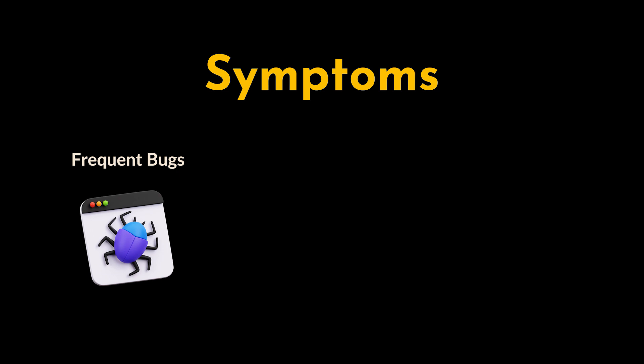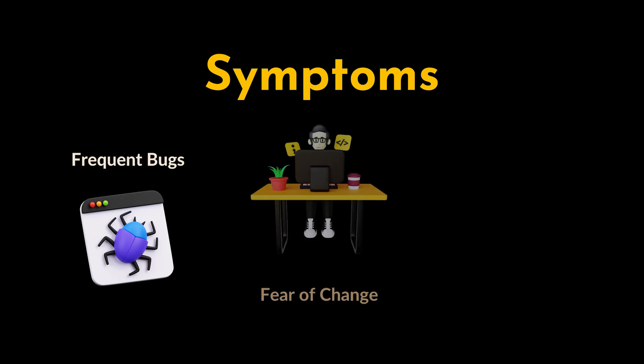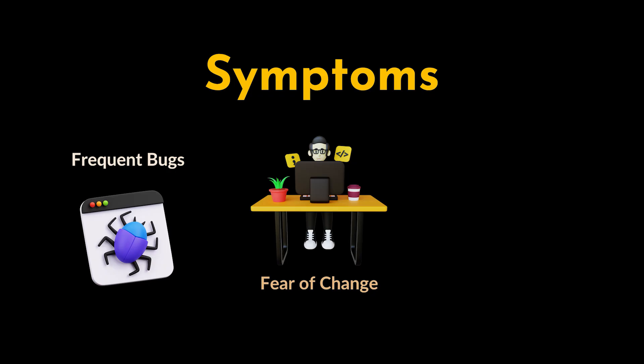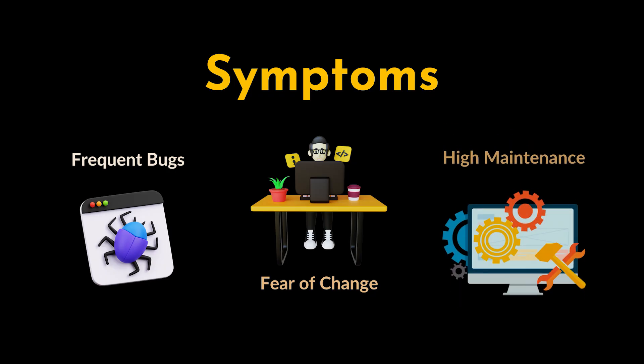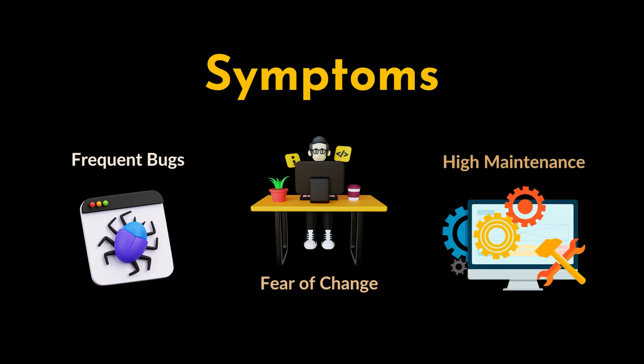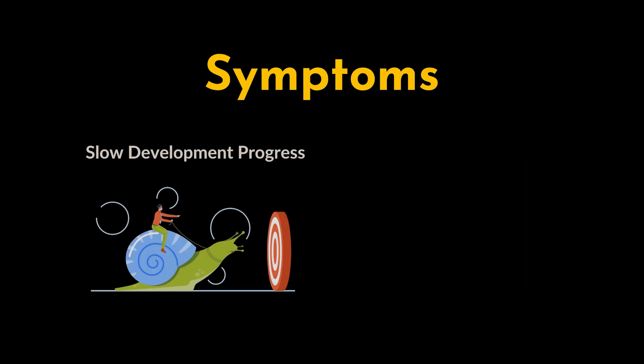To start off, frequent and unpredictable bugs: developers encounter new and unexpected bugs frequently, even with seemingly minor changes. Next, you'll notice a fear of making changes among the development team — they may worry due to the high likelihood of introducing new problems with every change. Additionally, there is high maintenance cost: a significant portion of development time and resources is spent on debugging and fixing issues rather than on new feature development.